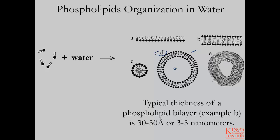Phospholipids can also arrange in more complex layers where you have multiple bilayers folding up on top of each other, forming hydrophilic regions both interior and exterior with different spaces throughout. The typical thickness of a phospholipid bilayer tends to be between 30 and 50 angstroms — that's about 3 to 5 nanometers.